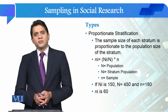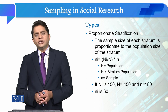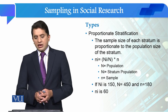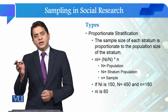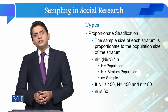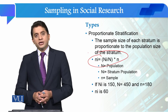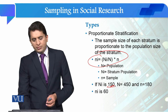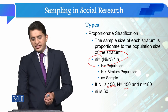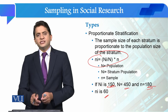There are two types of stratified sampling: one is proportionate stratification and the other is disproportionate stratification. In proportionate stratification, the sample size of each stratum is proportionate to the population size of that stratum. For example, if a stratum has a population of 150 out of a total population of 450, and our sample size is 180, then 60 from that stratum will be included in the sample.